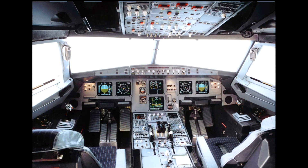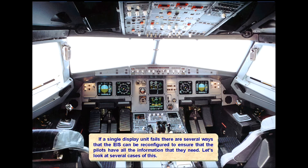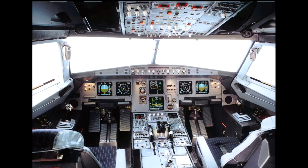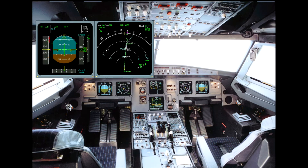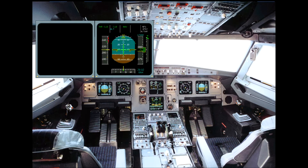If a single display unit fails, there are several ways that the EIS can be reconfigured to ensure that the pilots have all the information that they need. Let's look at several cases of this. If a primary flight display screen fails, the screen will blank. There is no white diagonal line since this is a screen failure, not a loss of data.